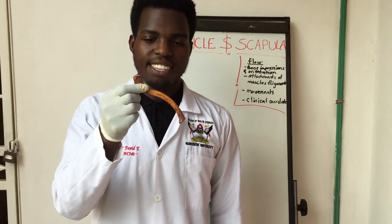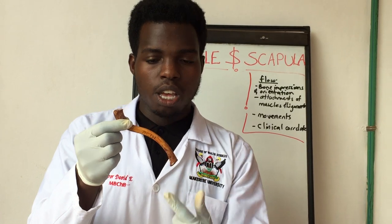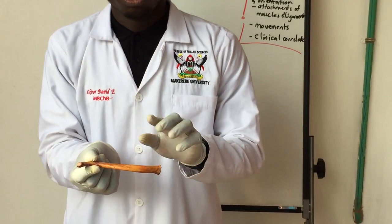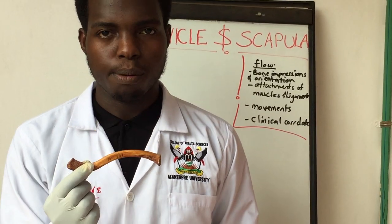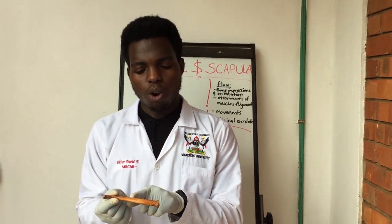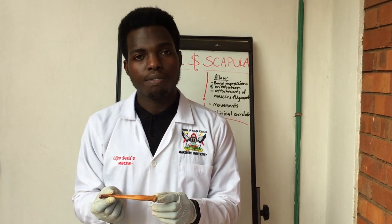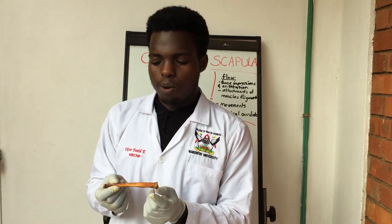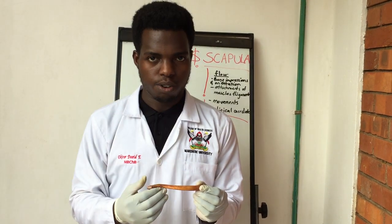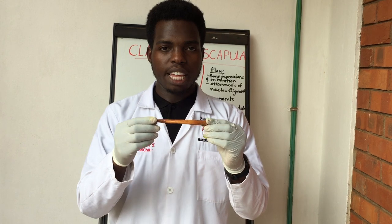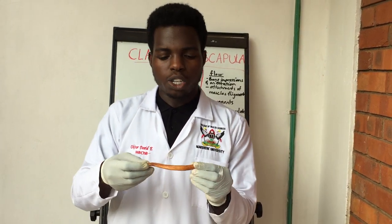Starting with the clavicle — as you can see, the clavicle is S-shaped, an elongated S. The superior surface is smooth and the inferior surface is rough because of attachments of muscles and ligaments. The medial aspect, known as the sternal end of the clavicle, is thicker and triangular in shape. Moving laterally, the lateral end is flat and is referred to as the lateral or acromial end of the clavicle.